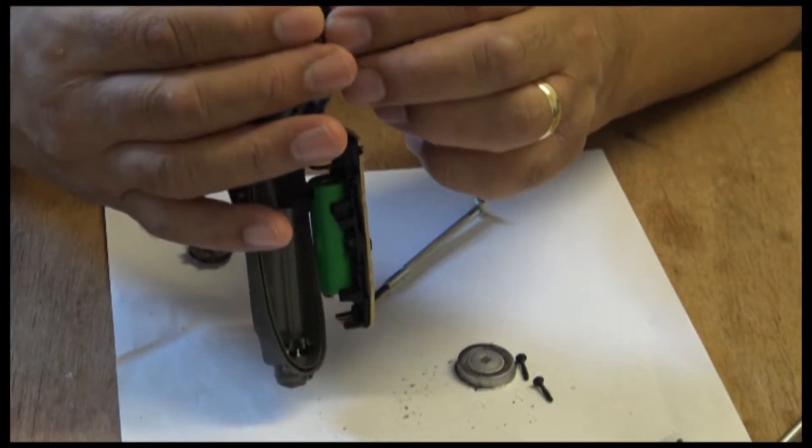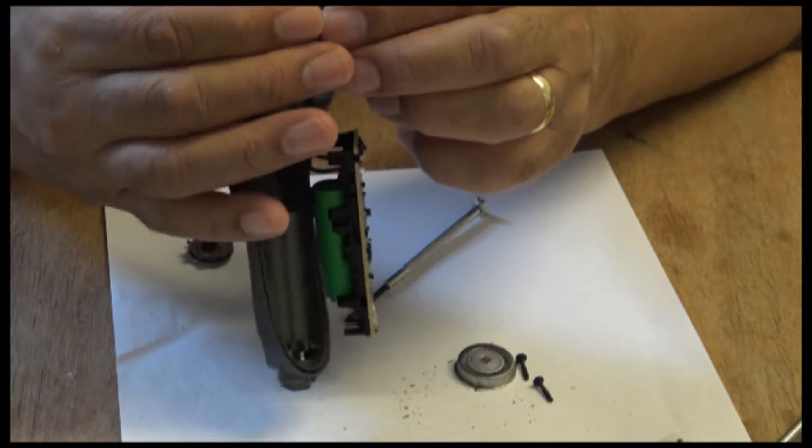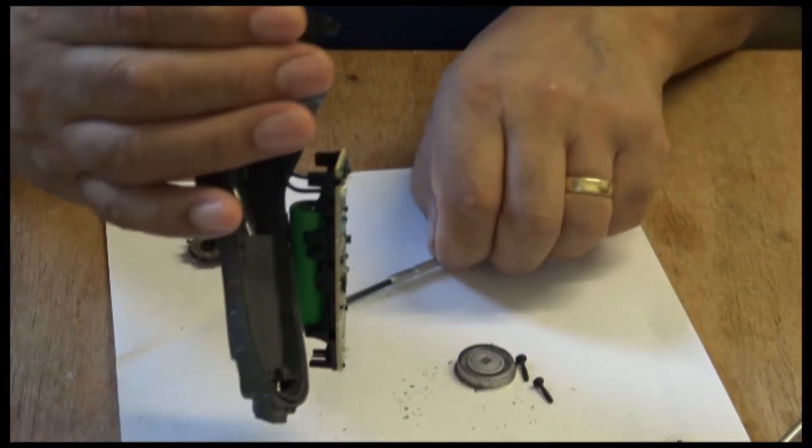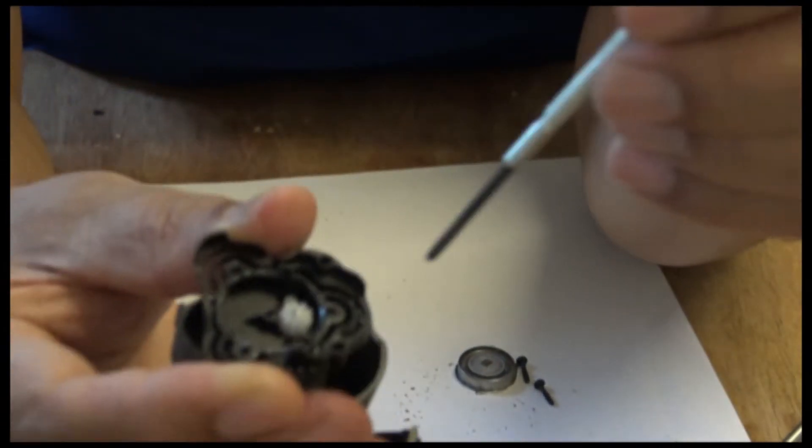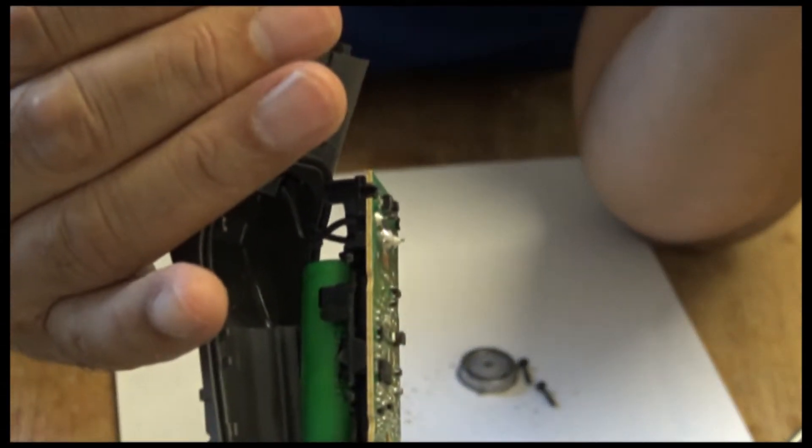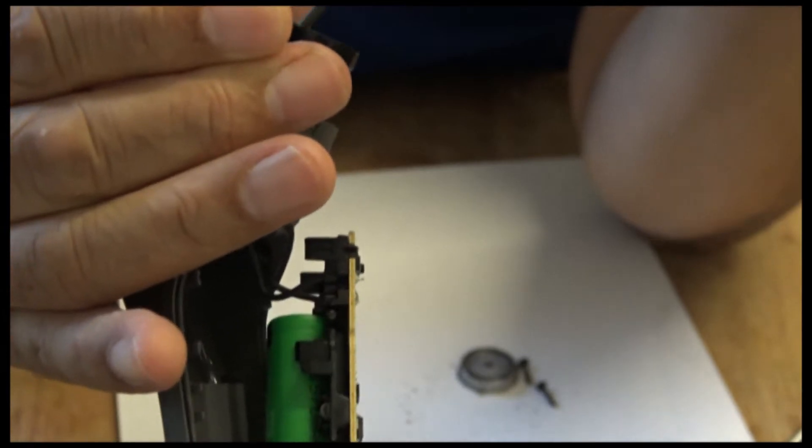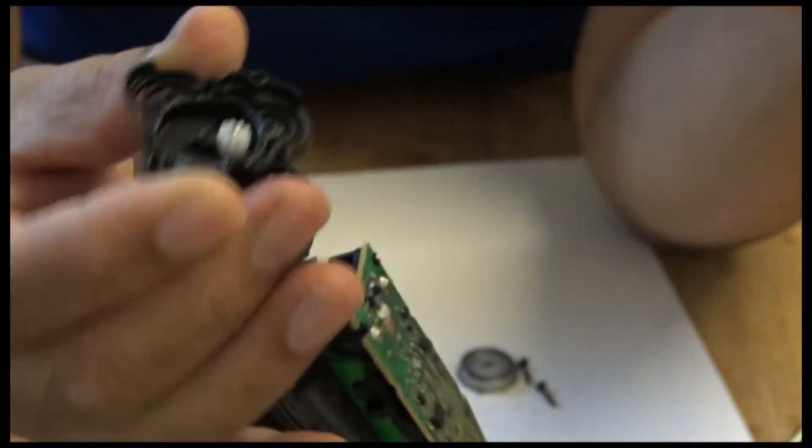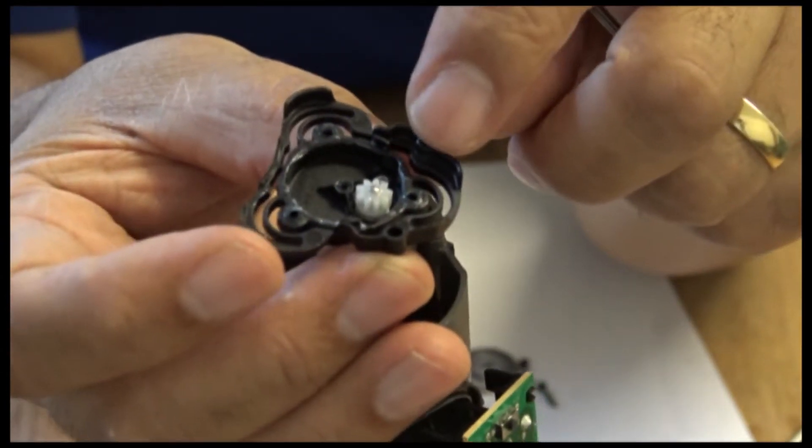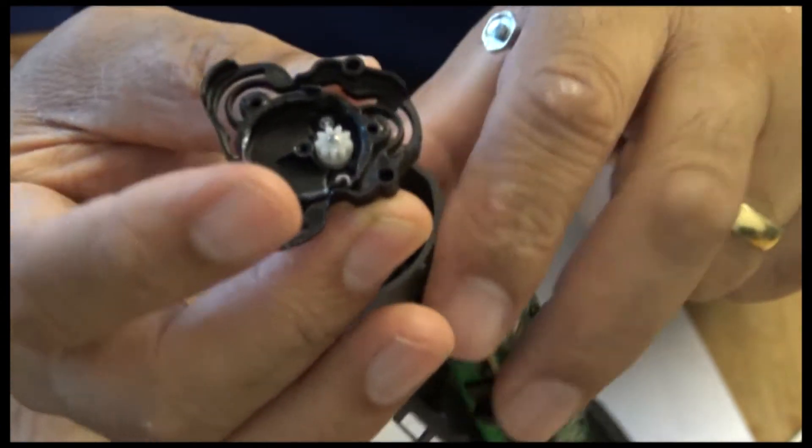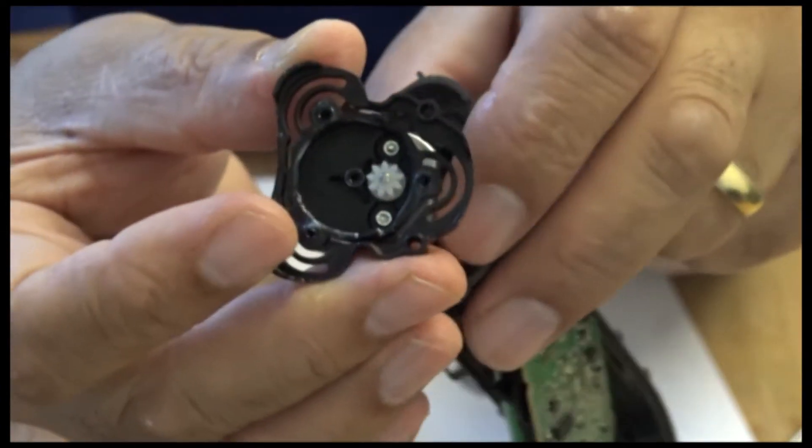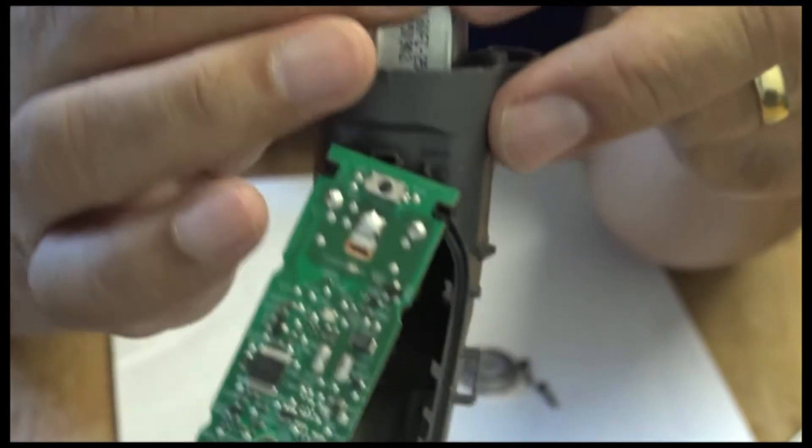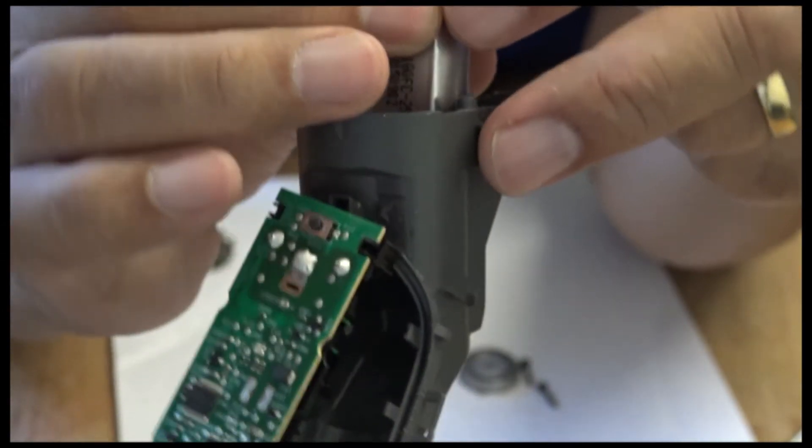Unfortunately, I don't have the screw to take that middle bit out. Seems like a funny kind of screw. If you have a special screw, you have to have a special screwdriver to take that out. I don't really want to break it.